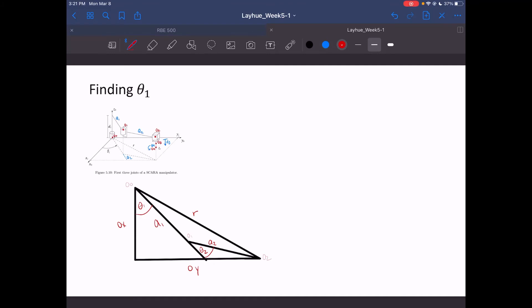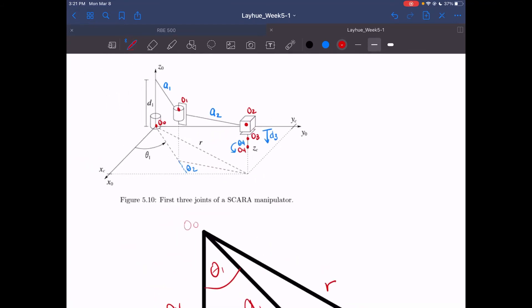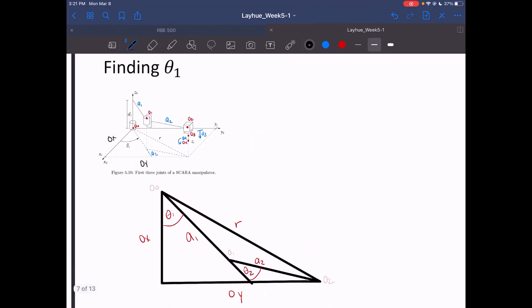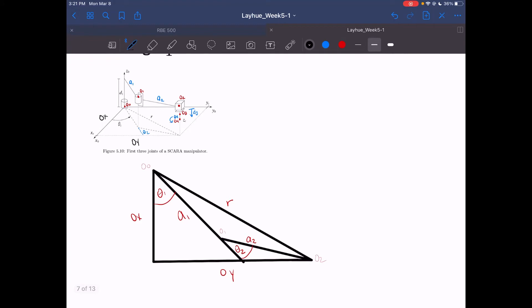We will now begin solving for theta1. We would use similar methods to how we found theta2, using triangles and side lengths that are known and that we can use. Looking at our figure, we know r, we know the distance in x and the distance in y. We can use those to create a triangle and get some angles. If we look at a triangle, theta1, we can't really find explicitly because we don't know this length between where a1 ends and how it extends out to create that triangle of theta2.